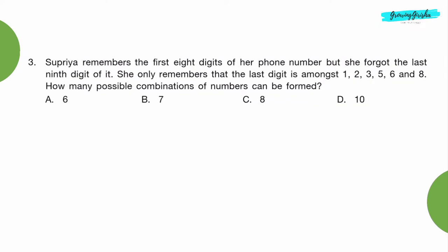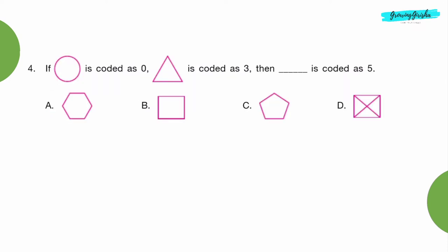Question 3: Supriya remembers the first 8 digits of her phone number but she forgot the last 9th digit of it. She only remembers that the last digit is amongst 1, 2, 3, 5, 6 and 8. How many possible combinations of numbers can be formed? Option A: 6.